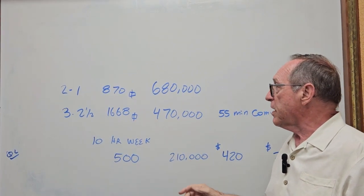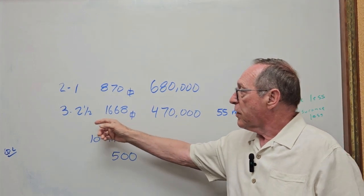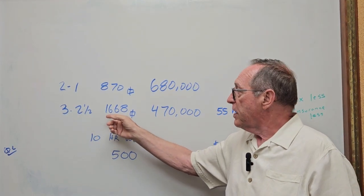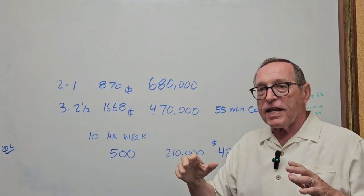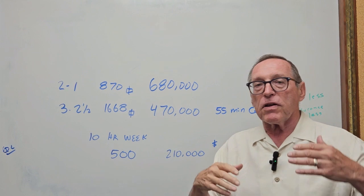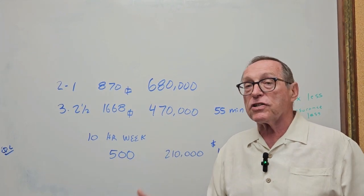Now I have a listing in Stockton. It's $470,000, three bedroom, two and a half bath, 1,668 square feet. And this is a nice house. It's got a park within a block away. It's in a nice, safe neighborhood. It's got excellent schools.